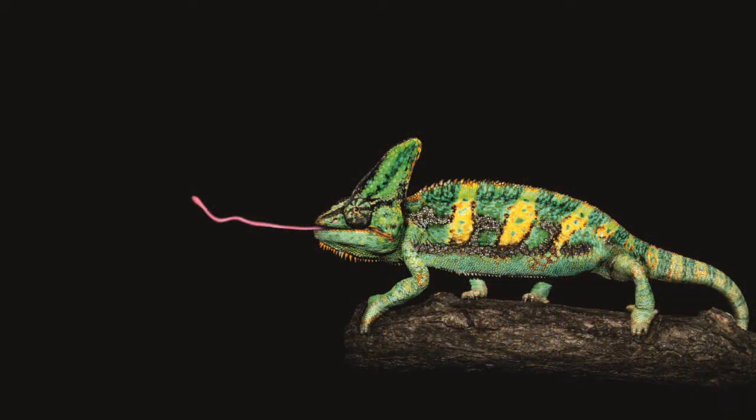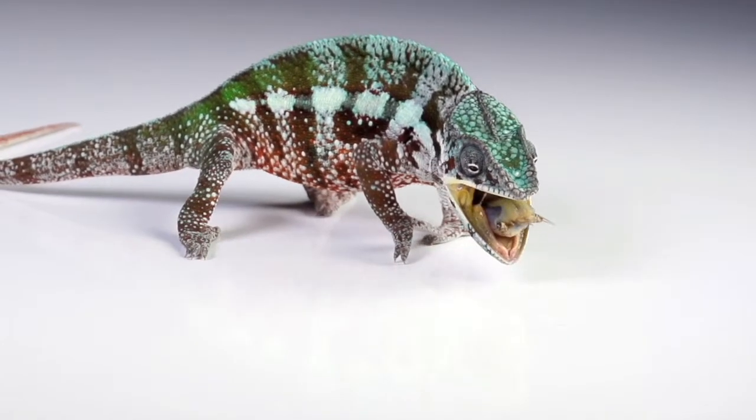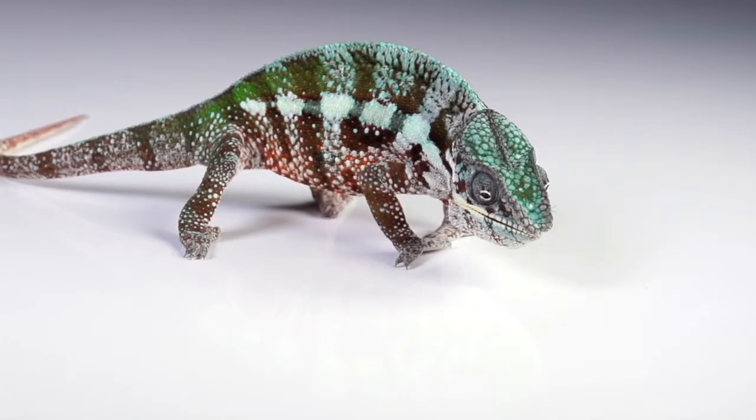Another special feature is the chameleon's hunting strategy. With the unique way they shoot out their tongue, they can attack as quick as lightning and securely fetch back their prey.